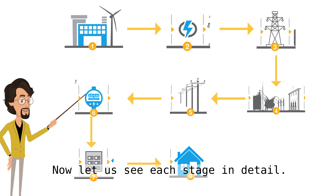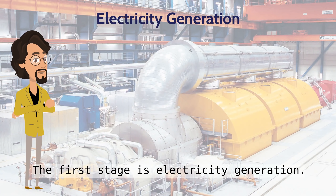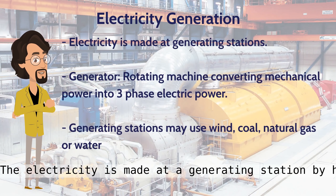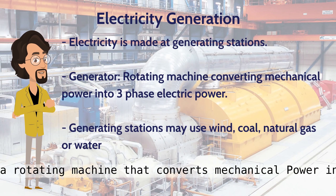Now let us see each stage in detail. The first stage is electricity generation. The electricity is made at a generating station by huge generators. A generator is a rotating machine that converts mechanical power into three-phase electric power.